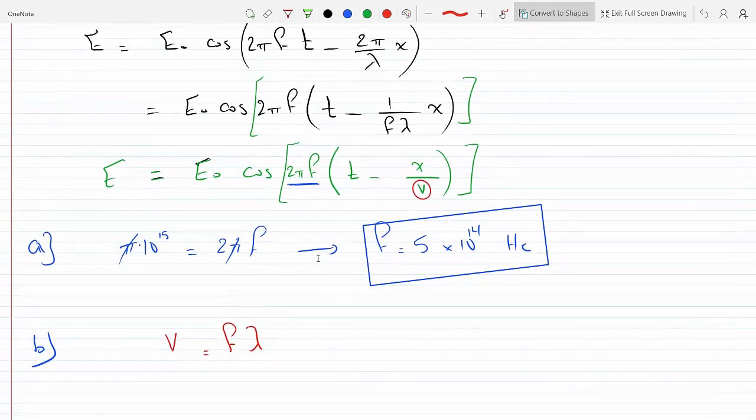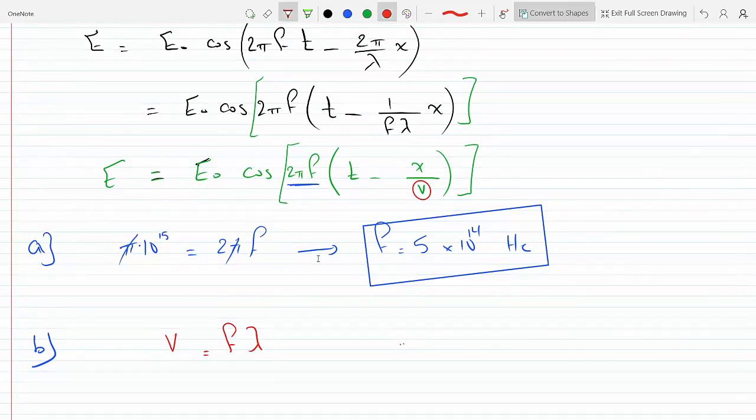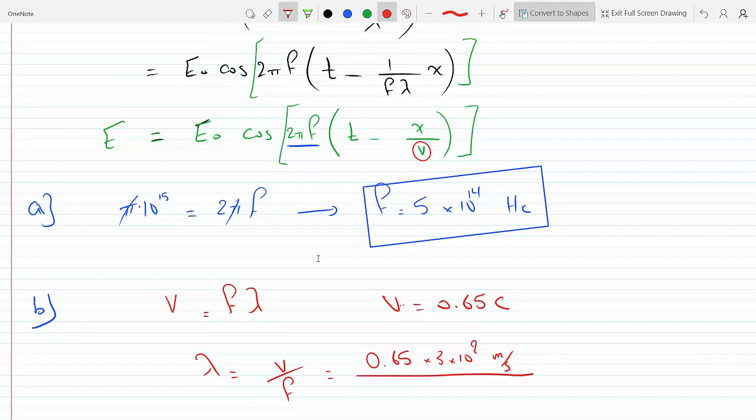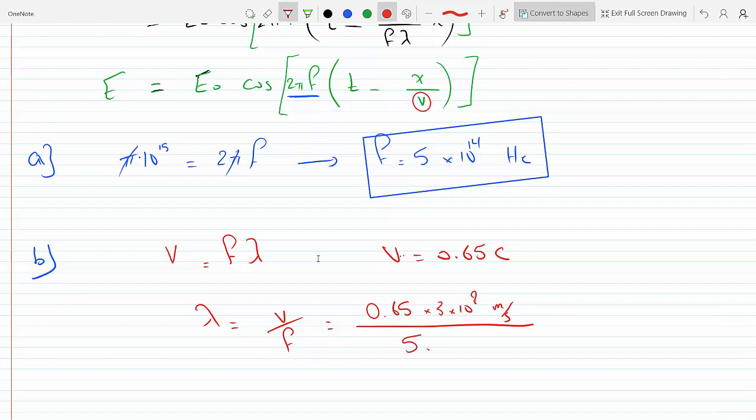And so V is equal to 0.65c. I just found the frequency, so the wavelength will be V over f. So this is 0.65 times 3 times 10 to the 8 meters per second divided by the frequency, which is 5 times 10 to the 14 per second.